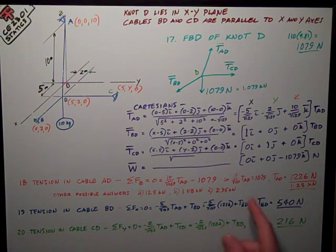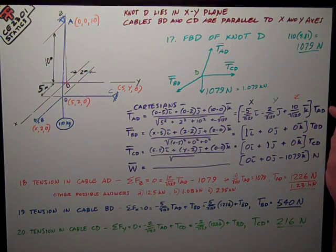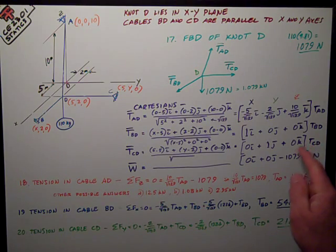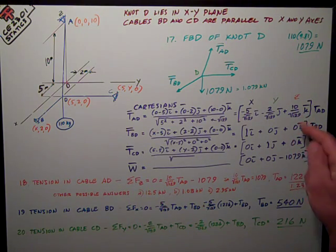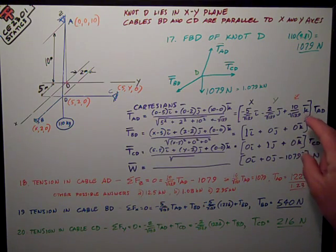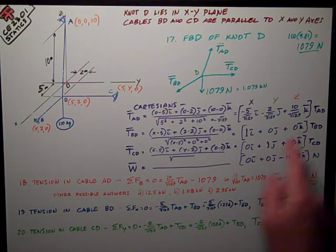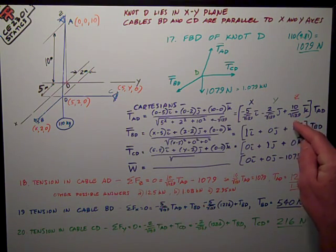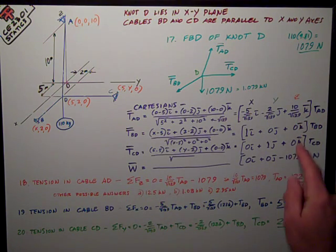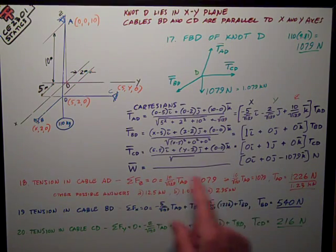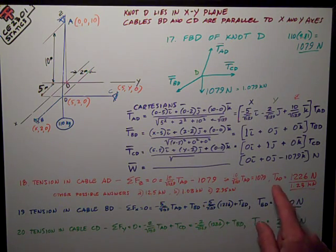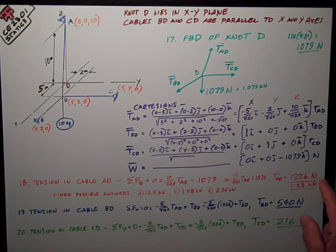I look over here at my columns, and I want to solve for TAD, and I look in my Z column, and I've got 0TBD and 0TCD, so I can see a direct solution there. I just need to equate those two or put them in an equation, which I do right here. The sum of forces in the Z direction is 0. It's this component, 10 over the square root of 129 TAD, minus 1079, the weight. So rearranging, I get 10 over the square root of 129 TAD is equal to 1079. Solving that, I get TAD is equal to 1226 newtons, or 1.23 kilonewtons.